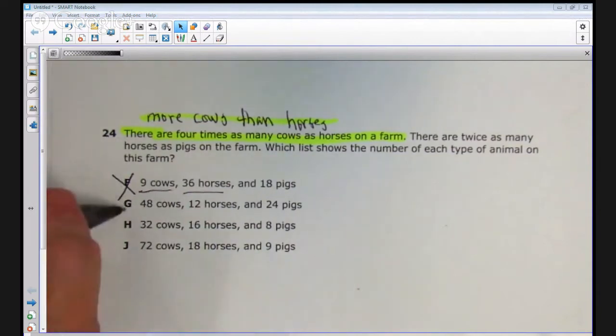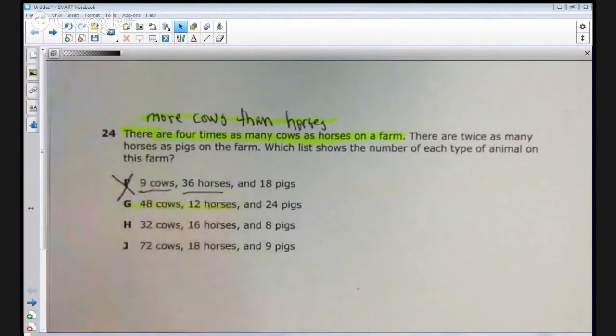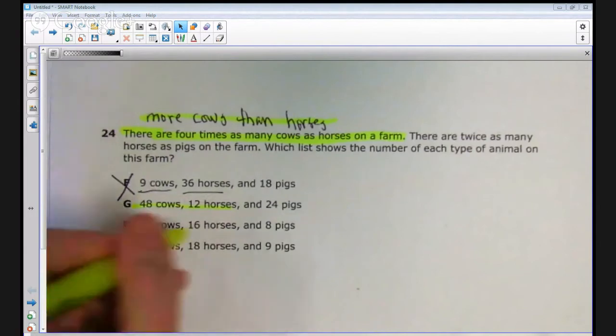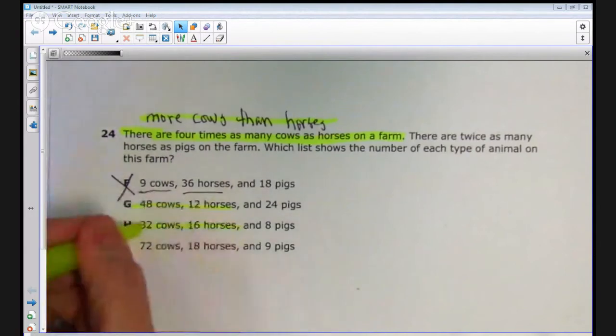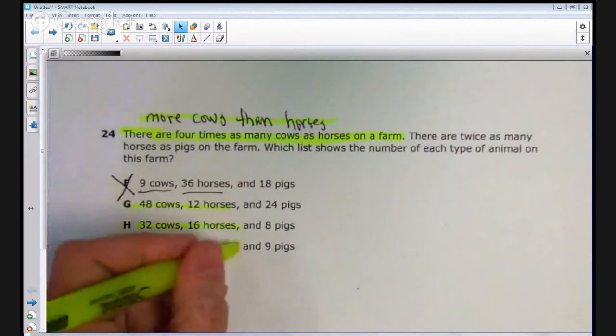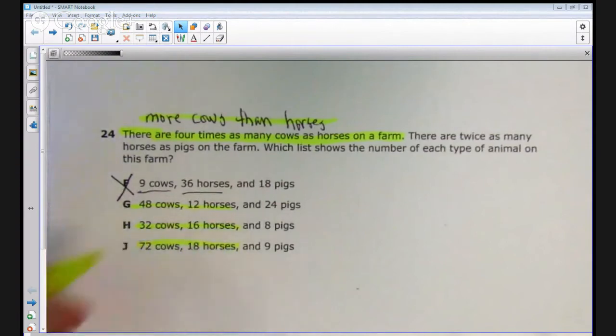In answer choice G, there are 48 cows and 12 horses. That's more cows than horses. In answer choice H, there's 32 cows and 16 horses. More cows than horses. And then in J, it's 72 cows and 18 horses. More cows than horses.